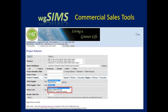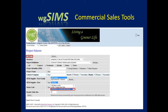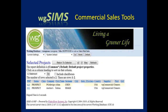Next, we'll use the Project Selector to pull up different types of status codes. A status code is the specific stage of your project — a lead, a prospect, engaged, or a customer. In this example, we're going to select a status code of Prospect to pull up all prospects in Sims. After clicking Search, you'll see that there are two prospects in the database.